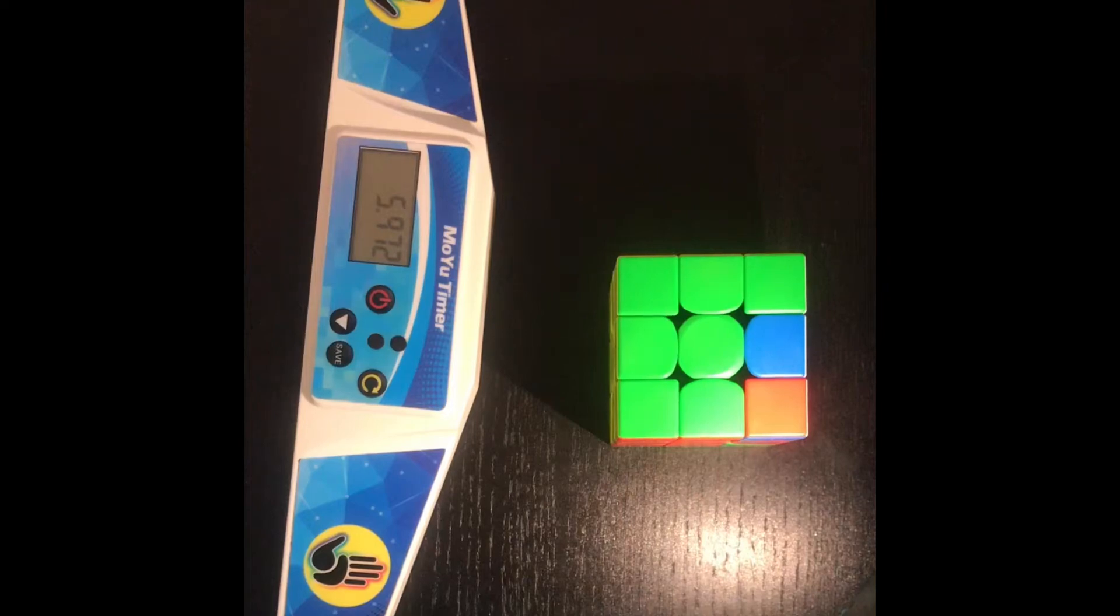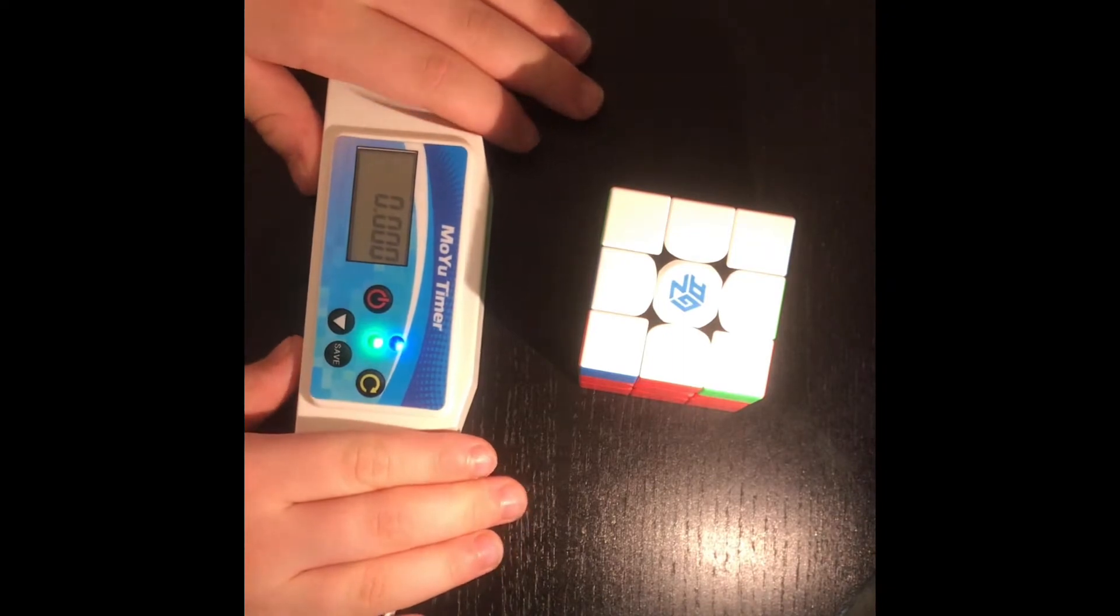Things cubers hate the most. Number one: when you're one second away from getting your personal best.